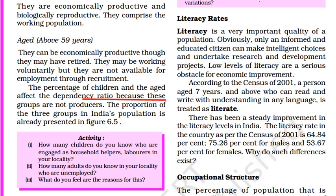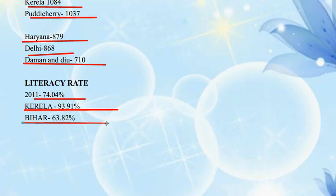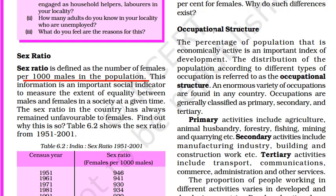What is literacy rate? Literacy is very important. According to 2001, a person aged 7 years and above who can read, write, and understand any language is termed as literate. There has been steady improvement in literacy levels in India. The literacy rate as per the 2001 census was 64%. According to the 2011 census, the literacy rate is 74.04%. Kerala is the best performing state in literacy — the state with the highest number of literate people. The worst performing state is Bihar.